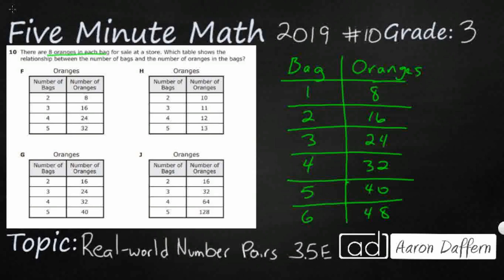And so before we continue, let's see if we can figure out what our rule is. So when we're looking at number pairs, when we're looking at a table, whether it be up or down or side by side, you always want to look across the categories. In this case, we're going to look side to side because we're going to look at our bags and our oranges and figure out what is the relationship between the numbers on the left and the numbers on the right.